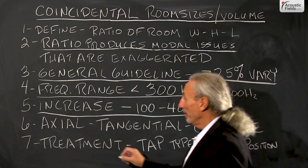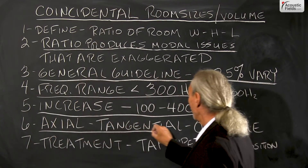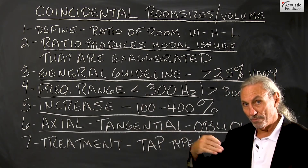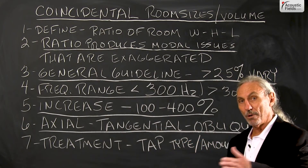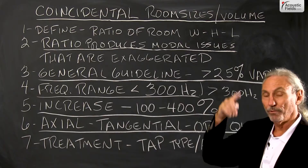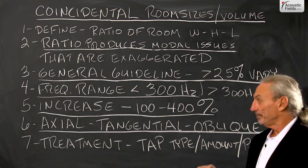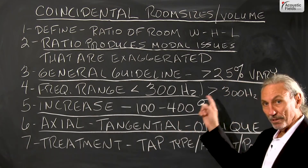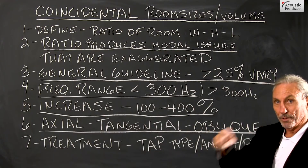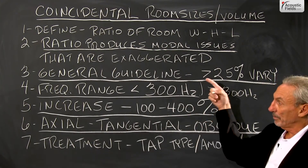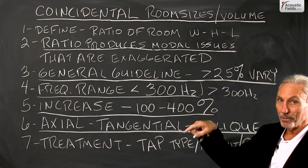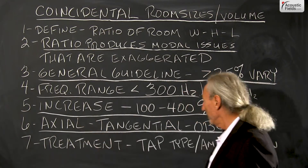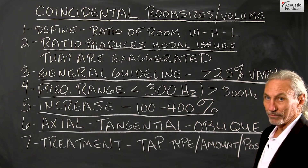Remember our three modes: axial, tangential, and oblique. Axial involves two parallel surfaces — sidewall to sidewall, floor to ceiling, front to rear. Tangential modes cross four surfaces, and oblique modes go corner to corner across all six surfaces. So we have two surfaces, four surfaces, and six surfaces covered by these three mode types.